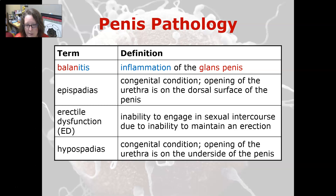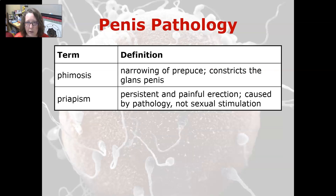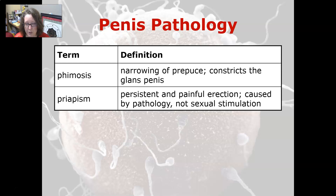Hypospadias is another congenital condition, but the opening of the urethra in this one is on the underside of the penis. Phimosis is a narrowing of the foreskin that constricts the glans penis. And priapism is a persistent and painful erection; it is caused by pathology, not by sexual stimulation.